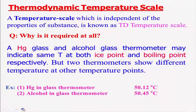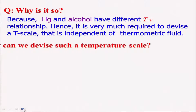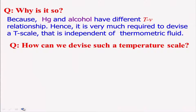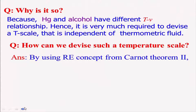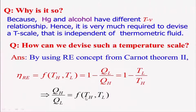Therefore we need a scale that is independent of the properties of the thermometric fluid or substance. Using the reversible engine concept from Carnot theorem 2, we know the efficiency of a reversible Carnot engine is 1 minus Q_L/Q_H = 1 minus T_L/T_H. This says that Q_H/Q_L is a function of both the source temperature T_H and sink temperature T_L.